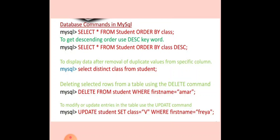Suppose we want to see the class column in descending order, we write ORDER BY class DESC. If we just write ORDER BY class without any keyword, by default it arranges values in ascending order.